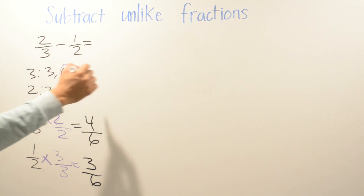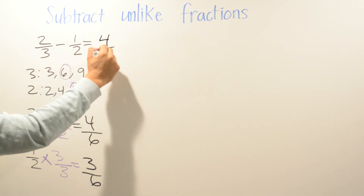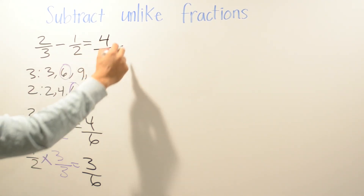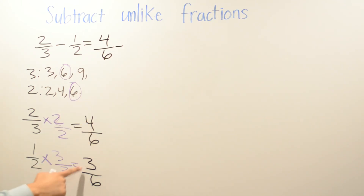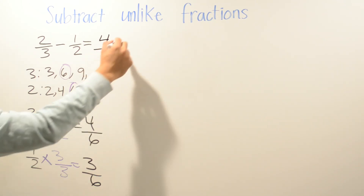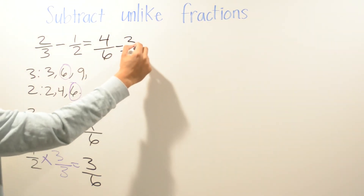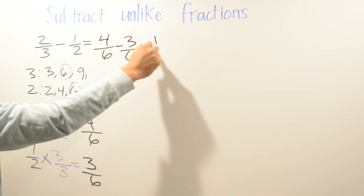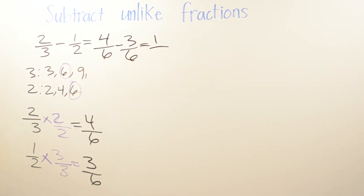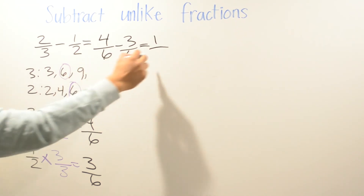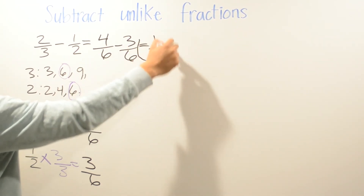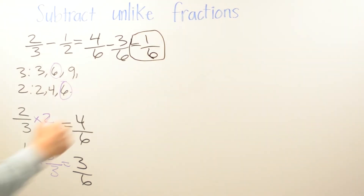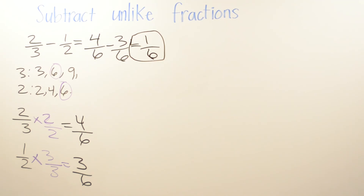Now I subtract: I have 4/6 minus 3/6. Four minus 3 is 1, and the denominator stays the same. So your answer is 1/6. If you got a different answer, go back and see where you made your mistake.